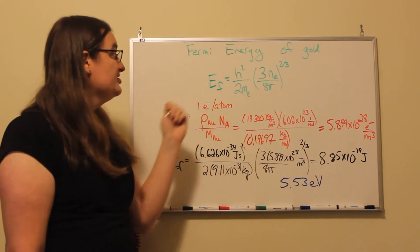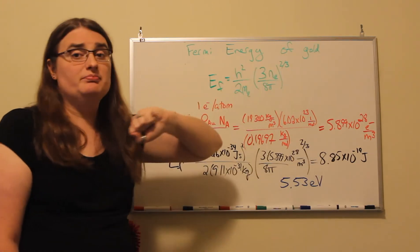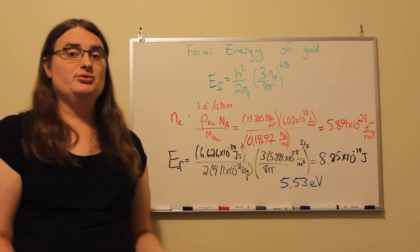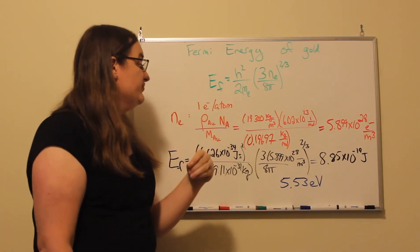So let's take a look at the Fermi energy in gold. We're assuming that each gold atom produces one electron that's given up to the sea of electrons creating this Fermi level.